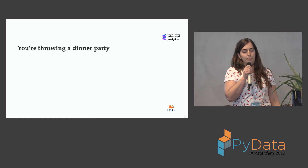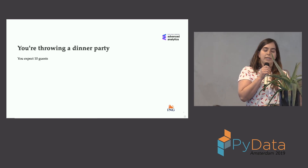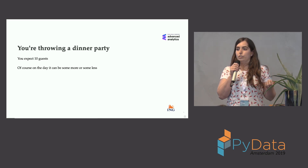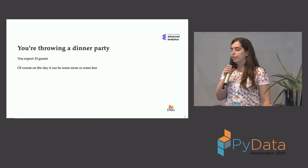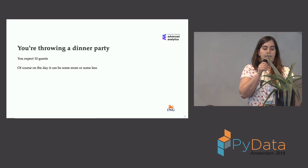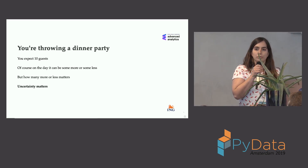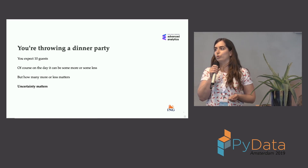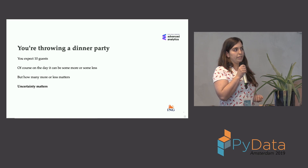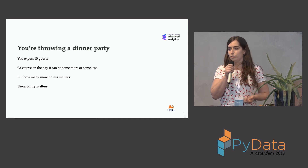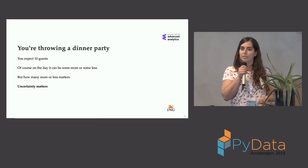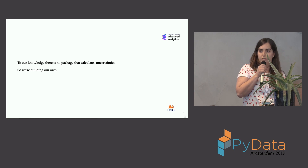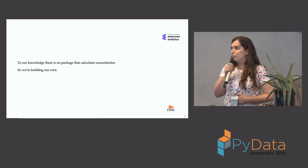Say you're throwing a dinner party and you're expecting about 10 guests. On the day of the party there may be some more or some less. It's kind of important to know how many more or less — say you're doing grocery shopping and it's just one person more or less, or six out of ten. So in this case uncertainty really matters.